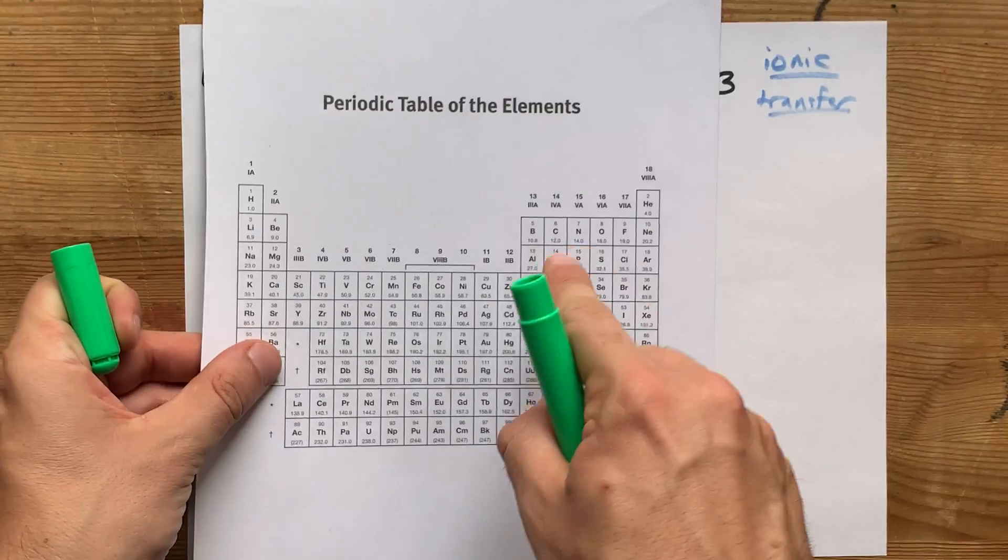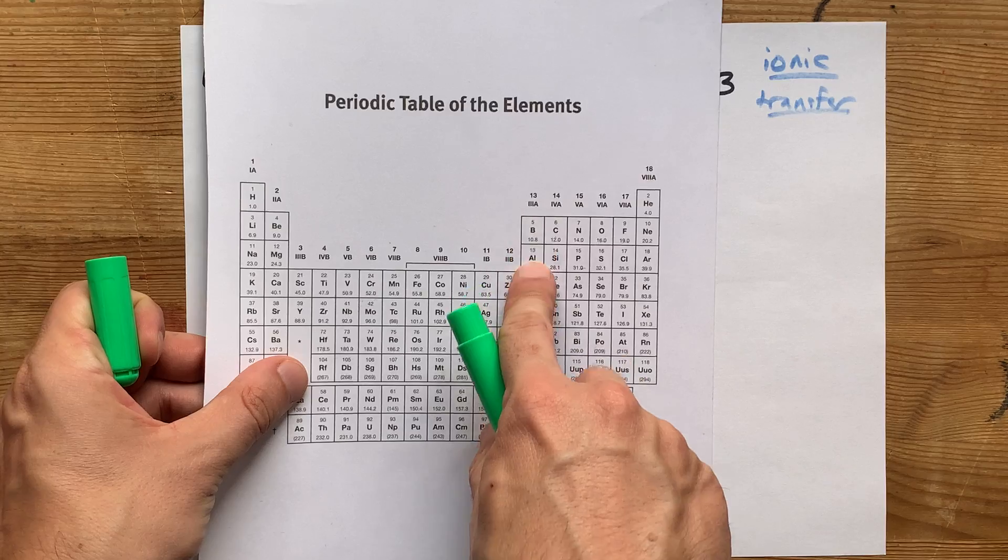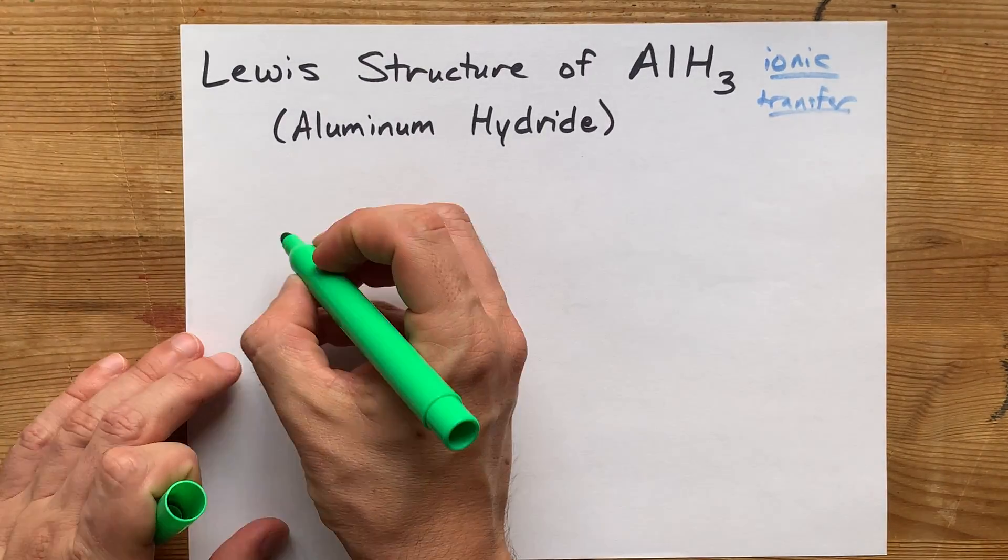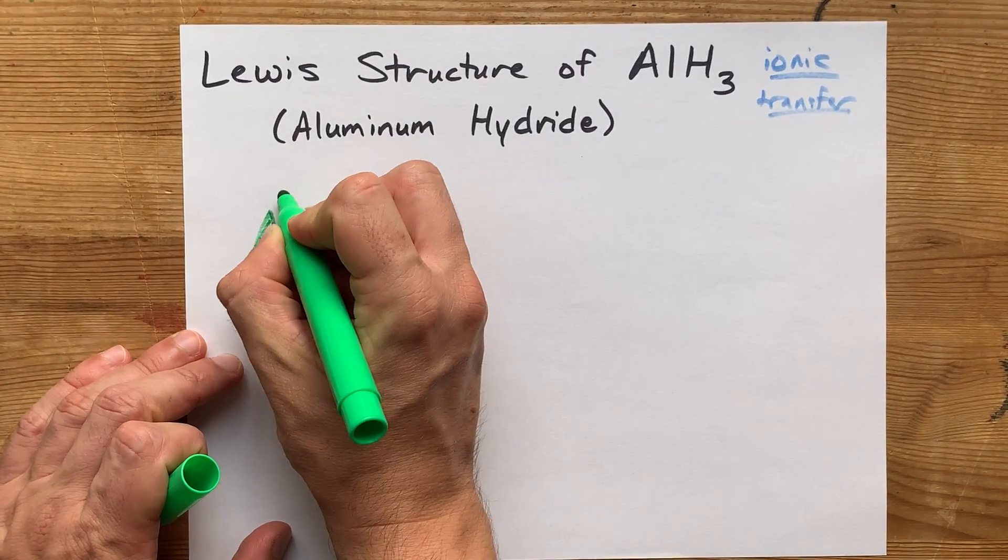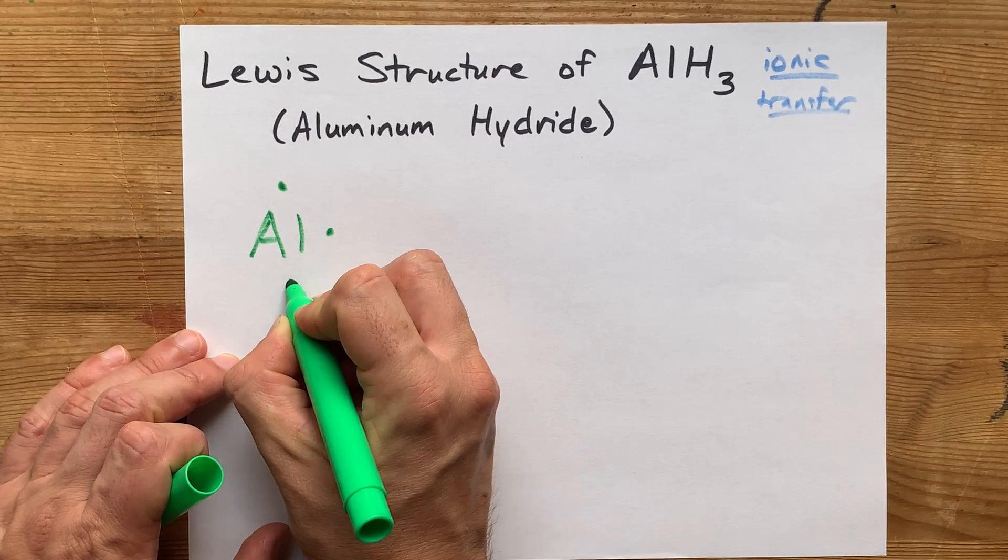Aluminum is here in group 13 of the periodic table. It will bring three valence electrons with it. One, two, three.